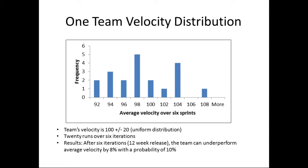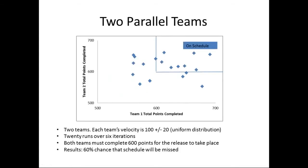That's just for a single team. Things become much more interesting and complicated with multiple teams. Here we have two parallel teams, both with a velocity of 100 plus or minus 20, and both teams need to complete 600 points for the release to take place. The standard approach would say we're going to finish 600 points. But Monte Carlo shows there's actually a 60% chance that the schedule will be missed.